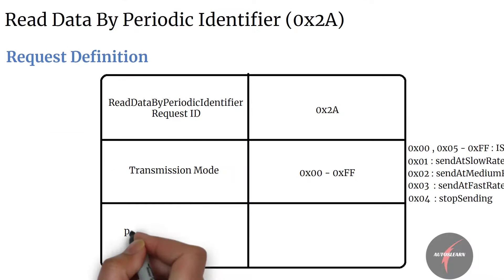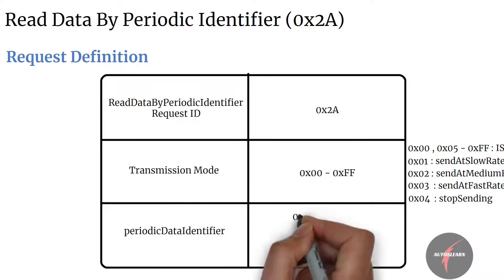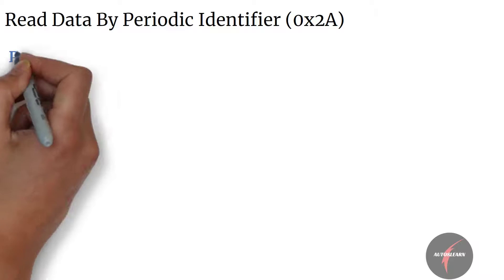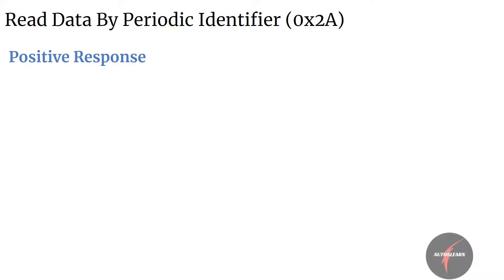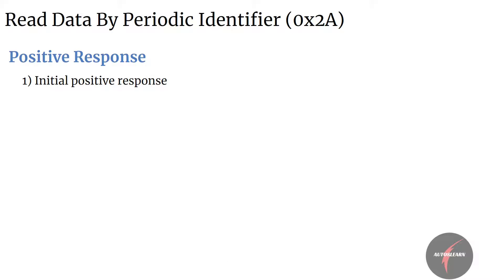The next parameter is the periodic data identifier, which defines the server data record being requested by the client. It shall be possible to request multiple periodic data identifiers with a single request — from 1 to M identifiers. There are two sets of positive responses for the request: one is the initial positive response, which indicates acceptance of the server request; the second is the subsequent periodic data response message, sent periodically as requested by the Read Data by Periodic Identifier request.